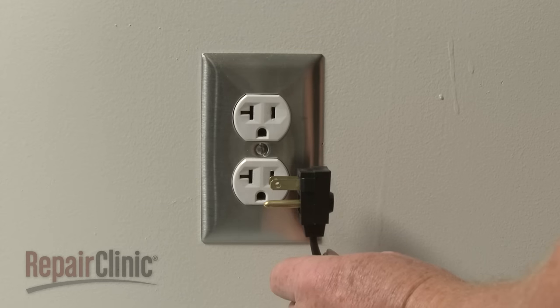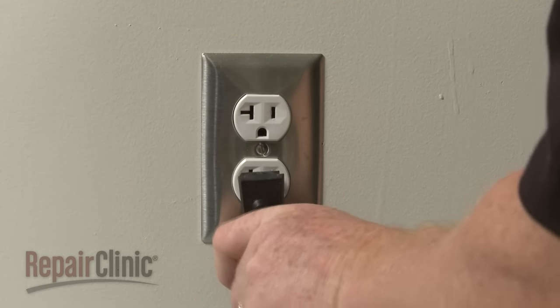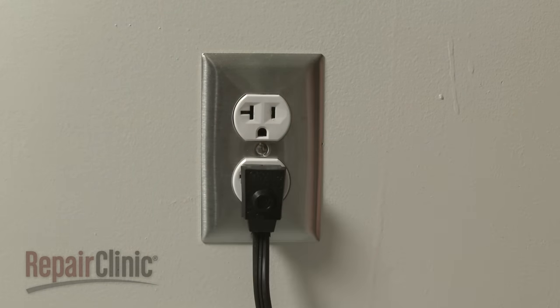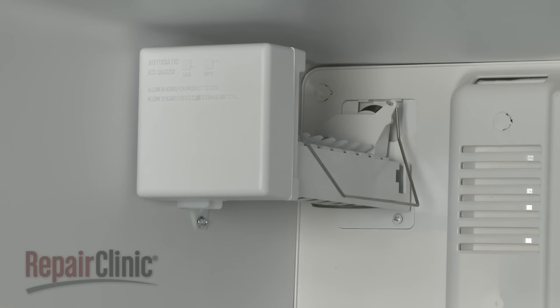Plug the refrigerator power cord back into the electrical outlet and carefully push the appliance back into its proper location. The ice maker should now be ready for use.